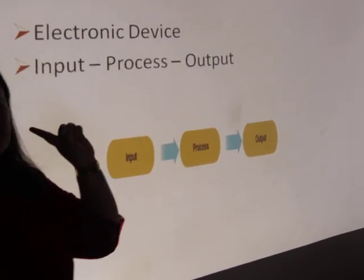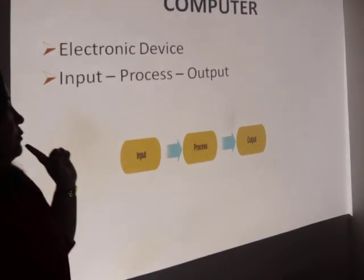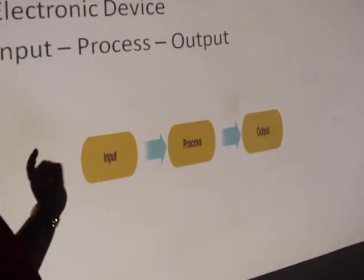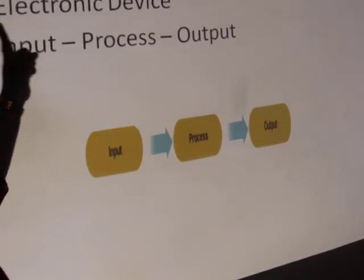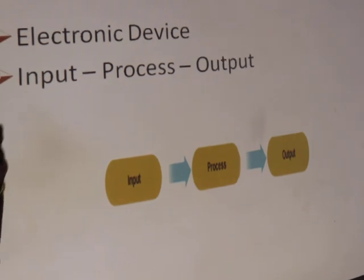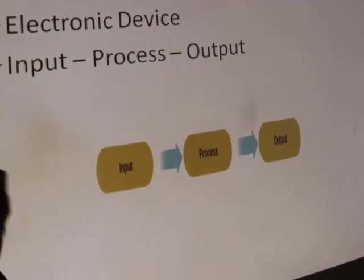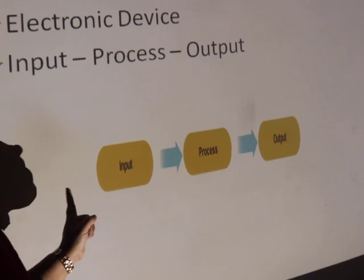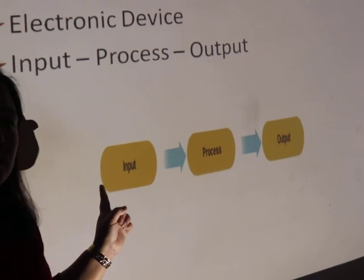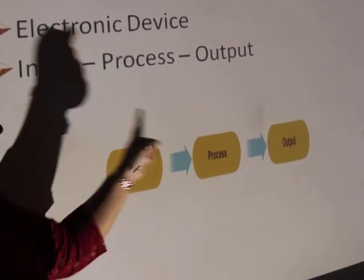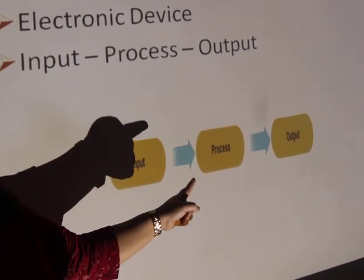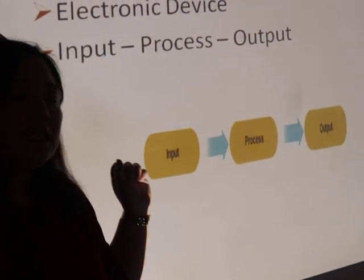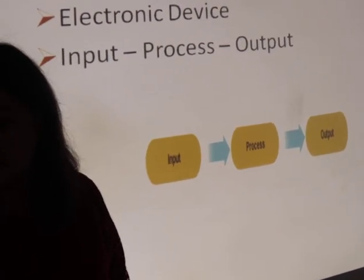Finally, the washing machine gives the output as clean and dry clothes. A computer is also an electronic machine that works in three parts. It takes input from the user in the form of data, then processes or stores it, and finally gives the output via output devices.